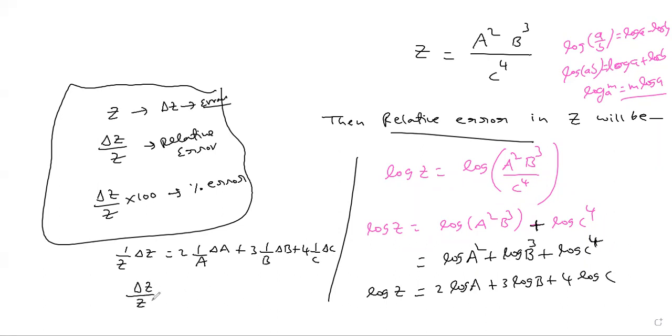Relative error in Z, delta Z by Z is equal to 2 delta A by A plus 3 delta B by B plus 4 delta C by C. Option A, that is correct. So check your option clearly. Option B is correct for this question.